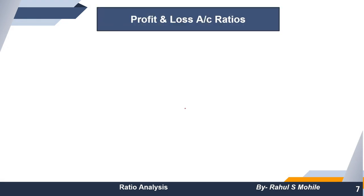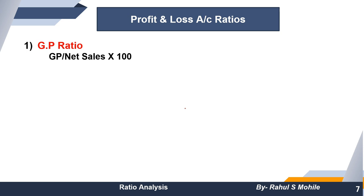Now moving to profit and loss ratios, also called income statement ratios. The most important point here: the denominator is always the same — net sales. Every profit and loss ratio will be related to net sales, expressed as a percentage. First is the gross profit ratio: GP divided by net sales multiplied by 100.